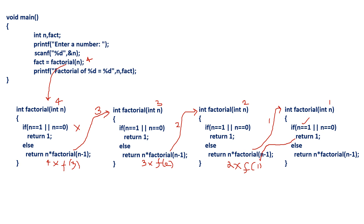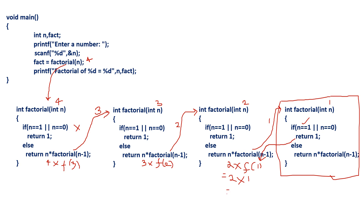It returns 1 to the calling place, and recursion is stopped. Now 1 is returned. factorial(1) returns 1, so 2 into 1 equals 2. This 2 is returned to its caller. Now the value becomes 3 into 2, which is 6. This 6 value is returned to its caller. Now the value becomes 4 into 6.